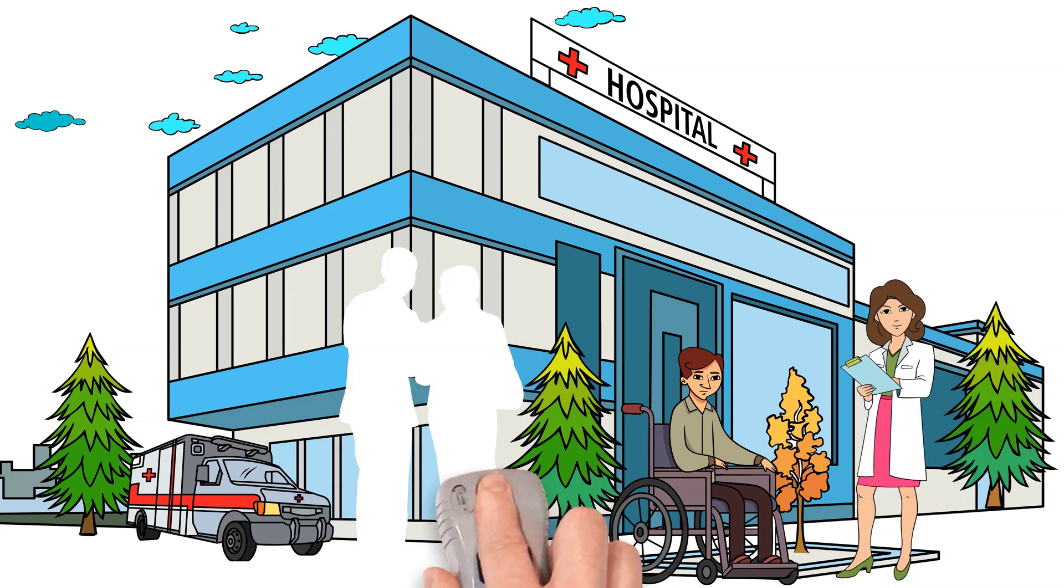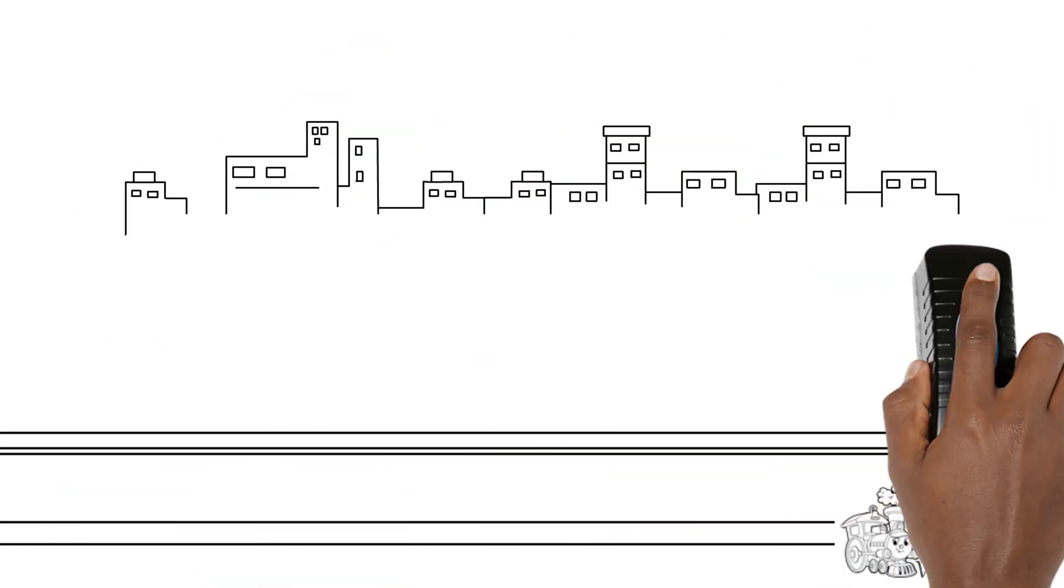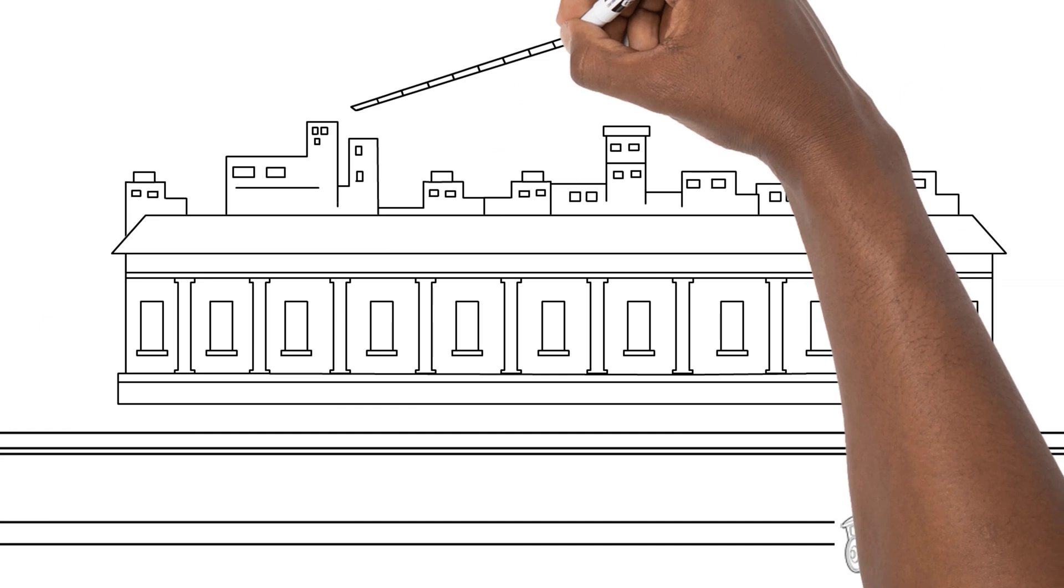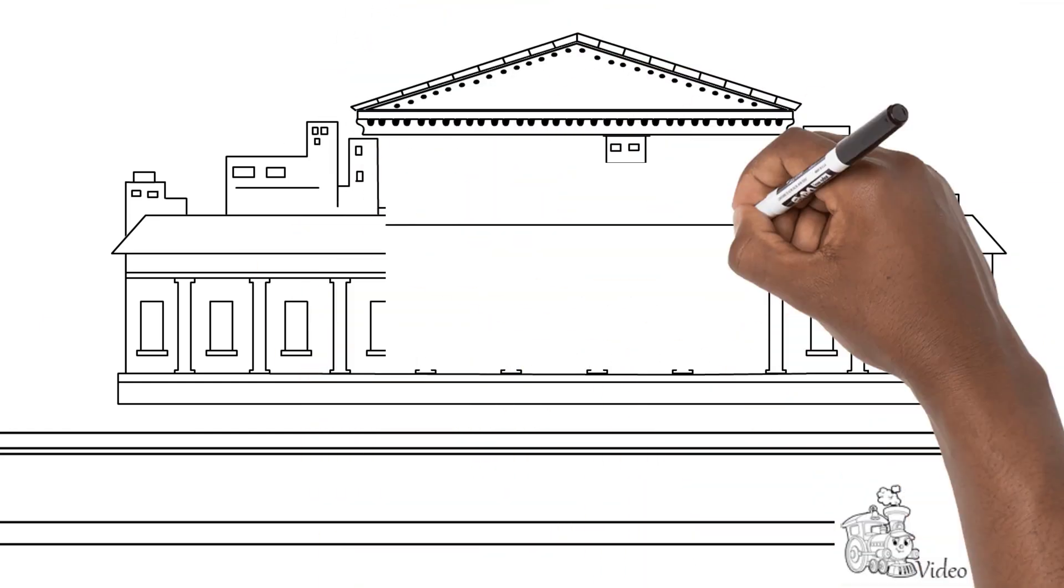What I've done in the Doodly video examples that you're watching right now is created a black and white scene and then recreated that exact scene using the colorized version of the same characters and props. It took me less than 15 minutes to put this entire video together.